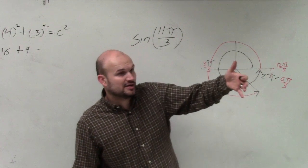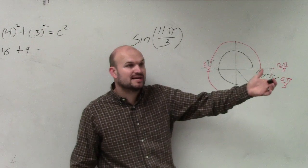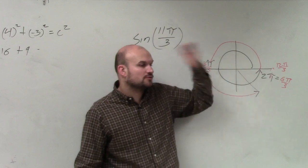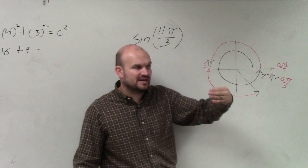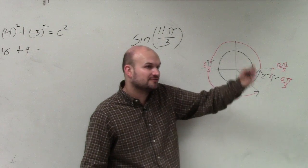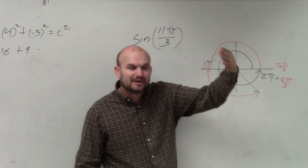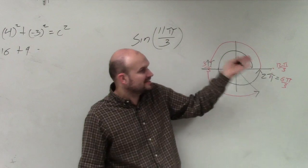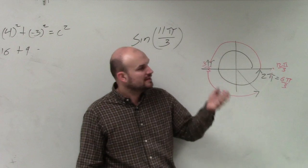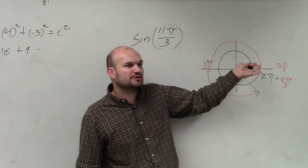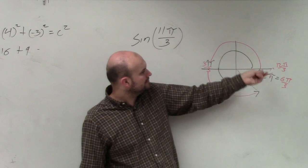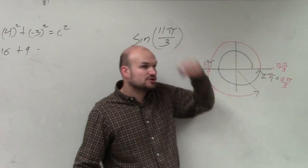I understand your point — you're converting it to degrees, which makes more sense. But I'm telling you, it's going to be much faster once you guys get the understanding of radians. The more practice you get with radians, you'll see this is much quicker. If you think about it in degrees, the angle is 660 degrees, which is over a full circle.